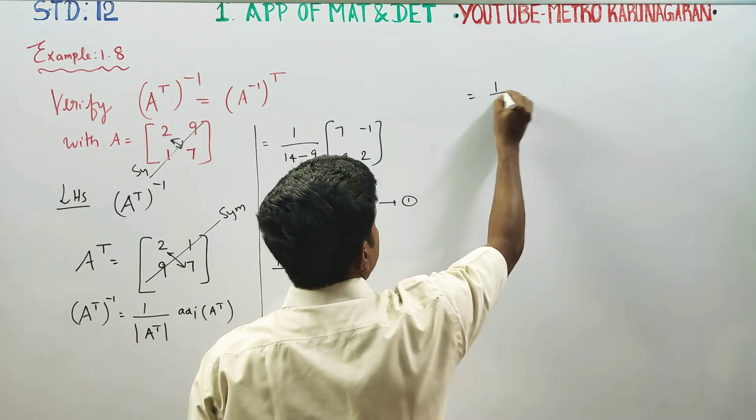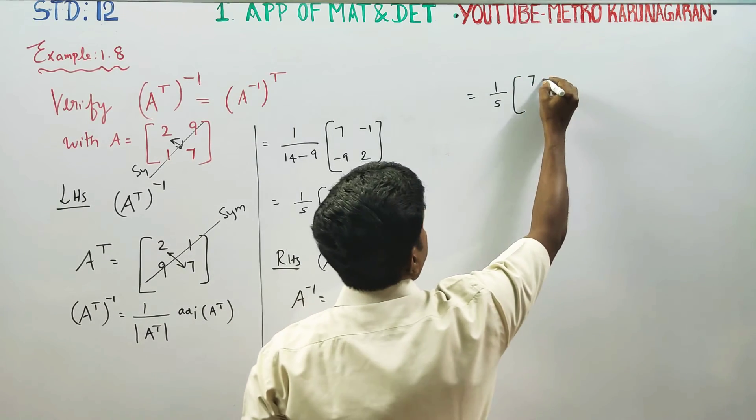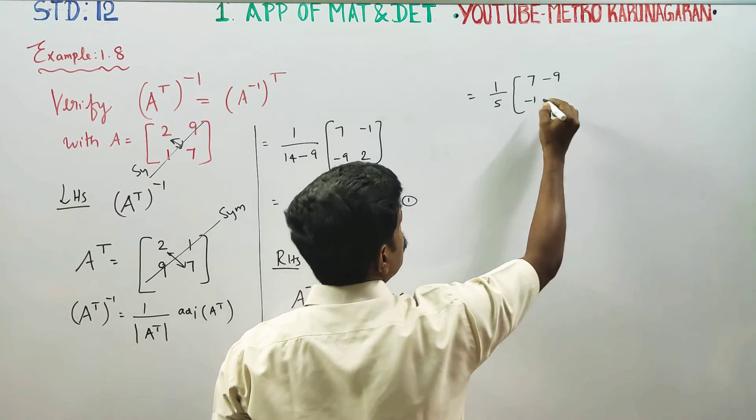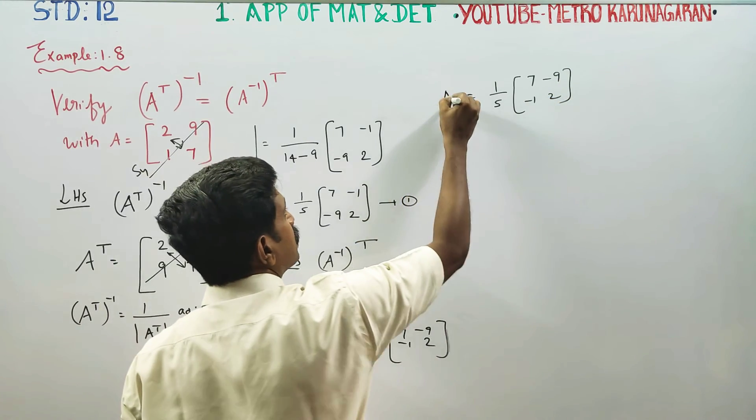Therefore, your answer will be 1 by 5, 7 minus 9, minus 1, 2 is your A inverse.